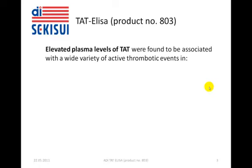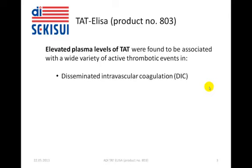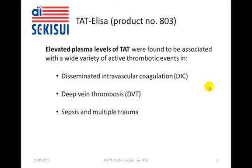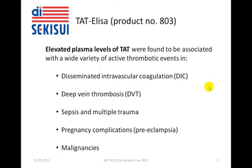Elevated plasma levels of TAT were found to be associated with a wide variety of active thrombotic events, and in particular during disseminated intravascular coagulation, so-called DIC, in cases of deep vein thrombosis, DVT, in sepsis and multiple trauma, during pregnancy complications such as preeclampsia, and in a wide variety of malignancies.